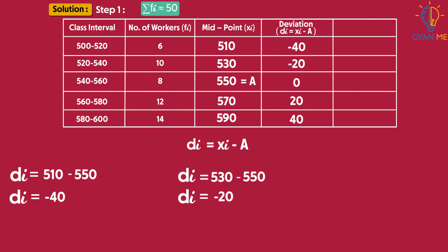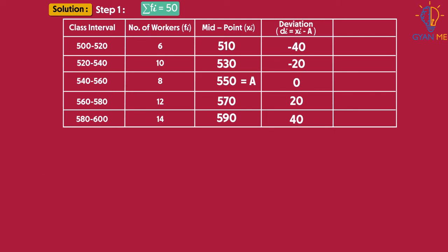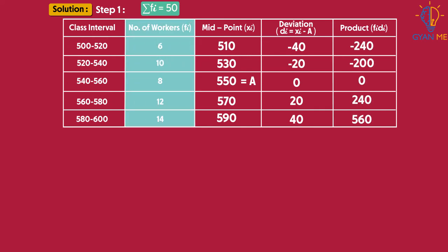Now calculate the product of fi and di. Accordingly, in our example, we get the values of fi di as follows. Also, take the summation of all fi di, that is, add all the products. And also add all the values of frequencies. Therefore, we have sigma fi as 50 and sigma fi di as 360. And we already know our assumed mean A is 550.